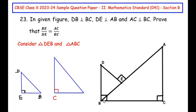DB is given perpendicular to BC, and AC is also given perpendicular to the same side BC. Therefore DB is parallel to AC, since both are perpendicular to the common side BC. Line AB acts as a transversal cutting the two parallel lines BD and AC at points B and A respectively, which means angle DBE equals angle CAB by the alternate angles property.